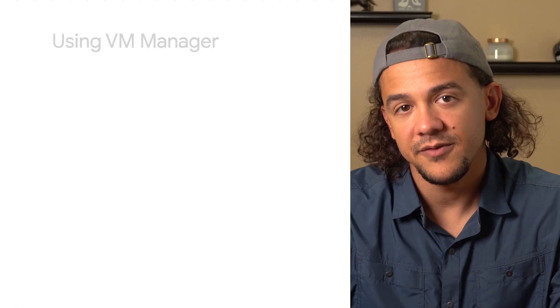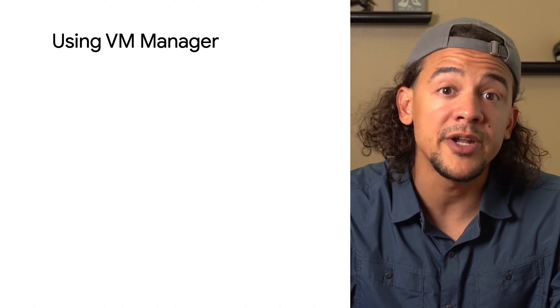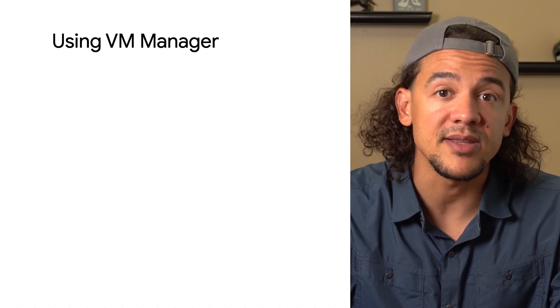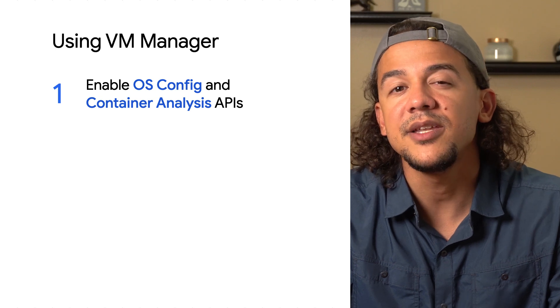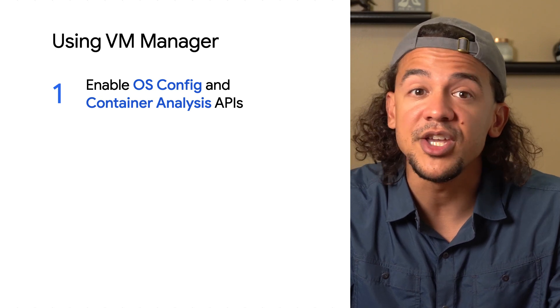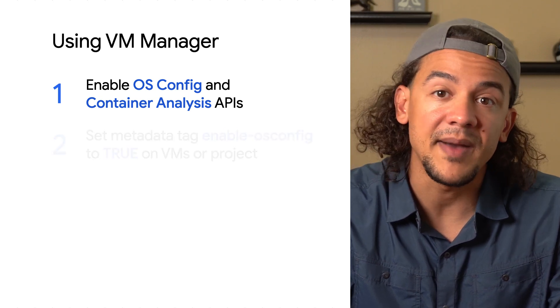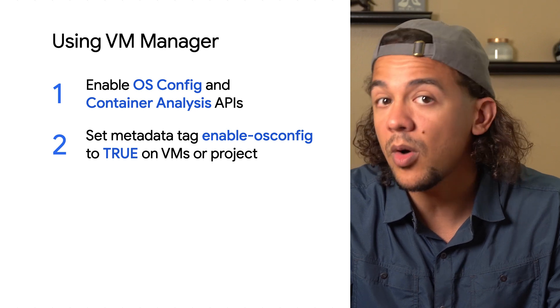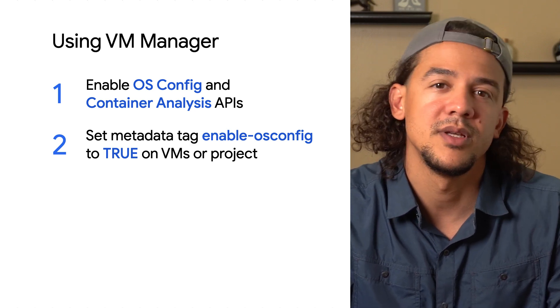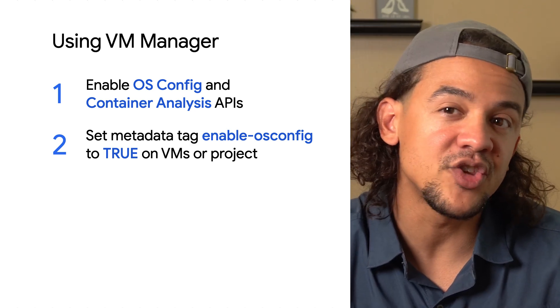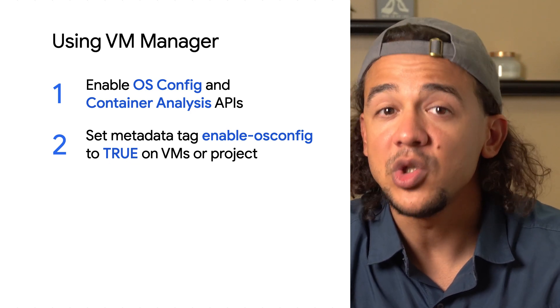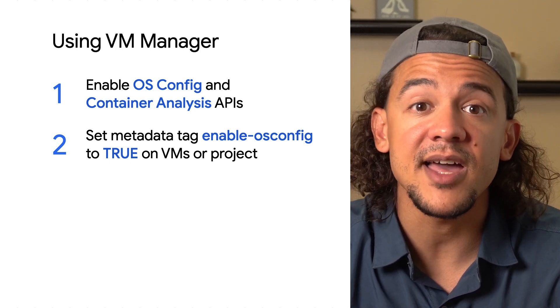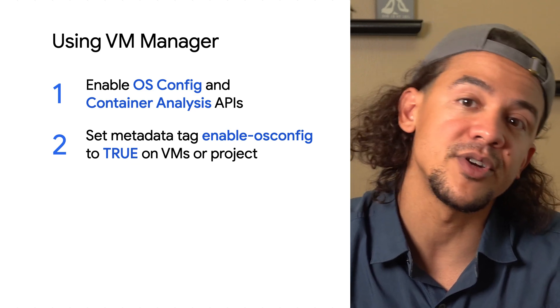If you want to use VM Manager for your fleet, here's how. First, there are two APIs that you want to enable on your project: OS config and container analysis. Then, you need to enable OS config on each VM in your fleet by setting the metadata tag 'enable OS config' to true. This will make the OS config agent active on the corresponding instances. You also have the option of adding this metadata tag to your project so that all VMs are included.